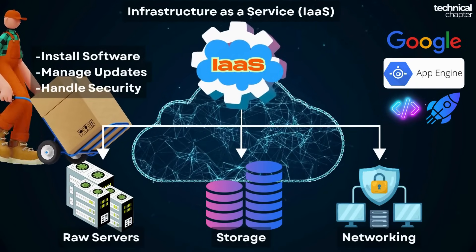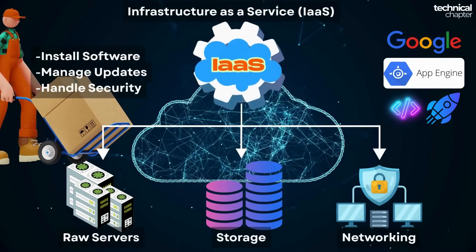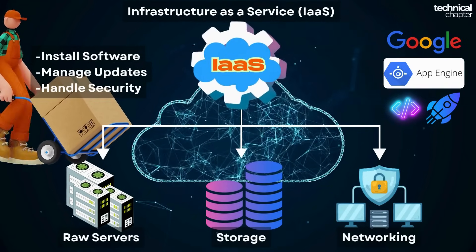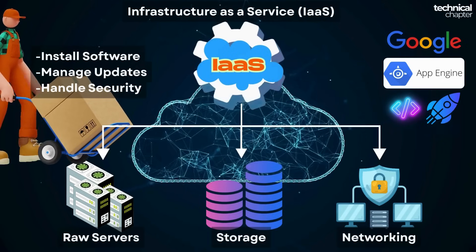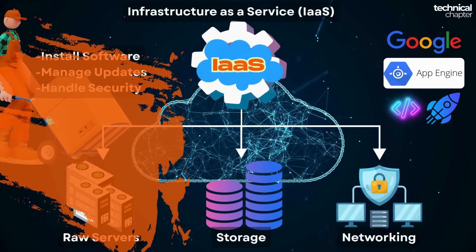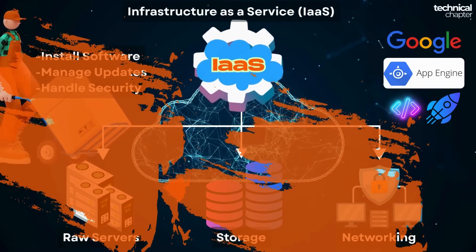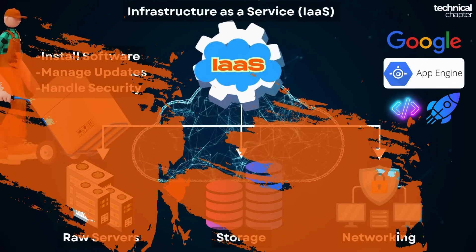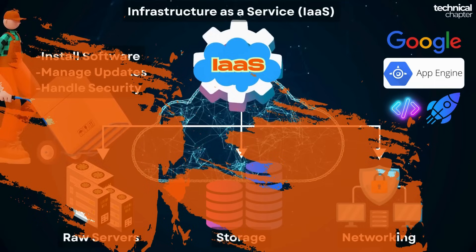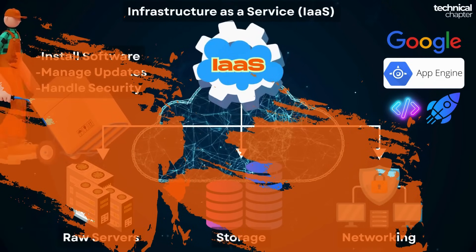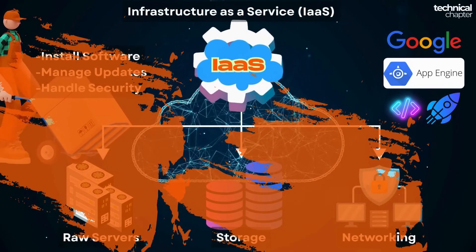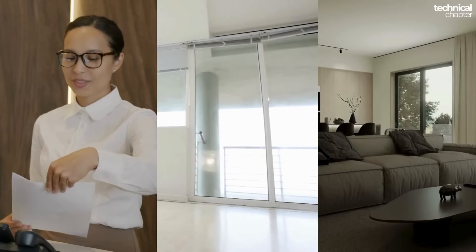Then why is this not IaaS? Infrastructure as a Service means you get raw infrastructure — servers, storage, and networking — and you have to set up everything by yourself: install the OS, runtime, software, manage scaling, update security, everything. With Google App Engine, you don't manage the servers or infrastructure at all — Google automatically handles all of that for you. You only focus on your app code. So it's not IaaS because the infrastructure is fully managed for you, not by you. This is classic PaaS: the platform takes care of the back-end, you just focus on your product.